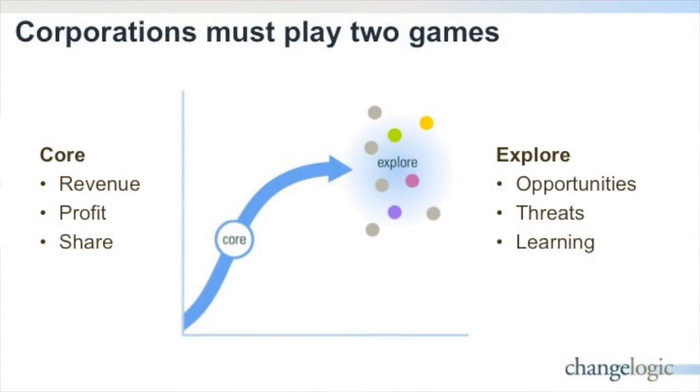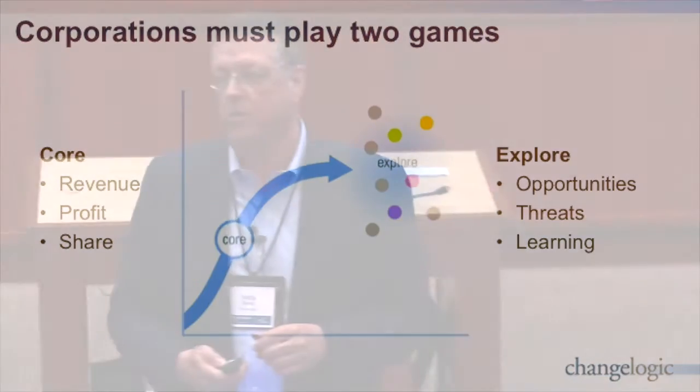You've got to be as concerned for your core business — your established franchise, the revenues, the profits, the margins — and you've got to be concerned with how you explore into the future. Neither of these two disciplines is in itself unknown. It's the tension of doing them together that is really the challenge and what many firms struggle to do.